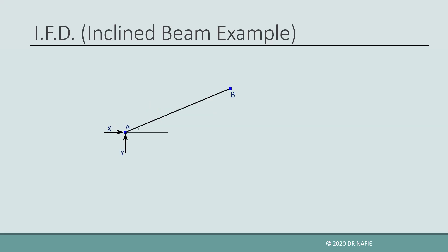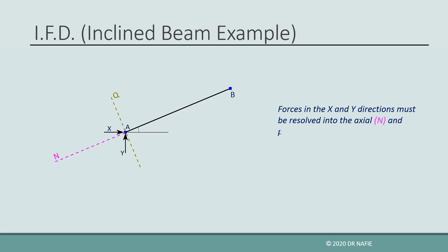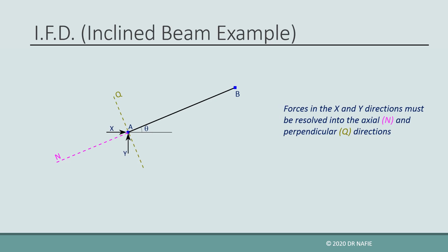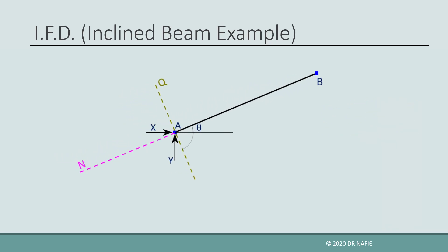Let us start with the first issue. In an inclined beam, the normal and shear forces will also be inclined. Therefore, we need to resolve the forces that are in the X and Y directions into their components in the normal N and shear Q directions. If the angle between the beam and the X direction is theta, then the angle between the N direction and X will also be theta, and the angle between the Q direction and Y will be theta as well.